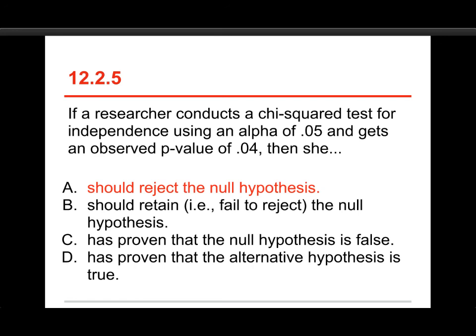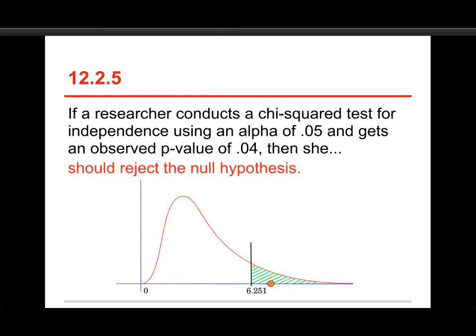It's just never correct to say that we have proven or disproven something. The data either are consistent with it or inconsistent with it, or the data are likely given a particular hypothesis or whatnot. But watch out for the word proved, very loaded. And again, here's our situation where this time we have rejected the null hypothesis, because now we've got our little cutoff there of 6.251, but our observed value given by the dot is on the far side. It's in the shaded region of rejection, so we would reject the null hypothesis.